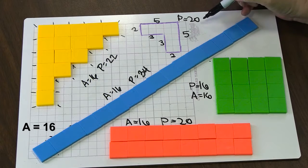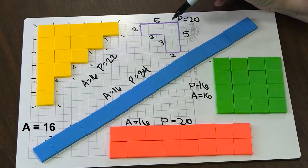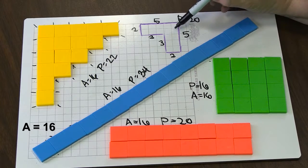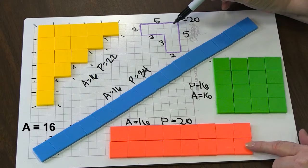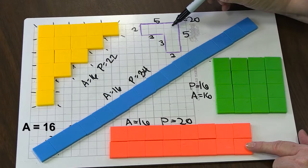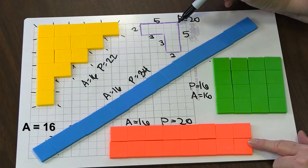The area is still 16. And they might notice now that they have two shapes, this one on the graph paper and the orange one, that both have the same perimeter, even though they're different shapes.